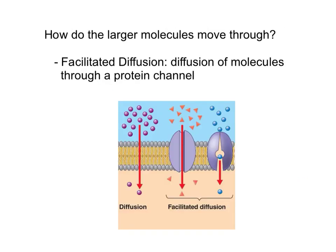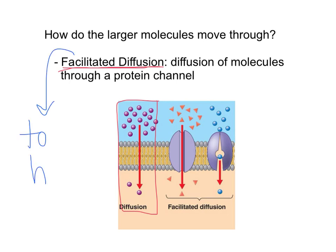The first question we want to talk about is how do larger molecules fit through? When plain old diffusion doesn't work and a molecule can't fit through the cell membrane, how does it get across? Well, we're going to see something called facilitated diffusion. The word 'facilitated' means to help, so facilitated diffusion is simply diffusion with help.